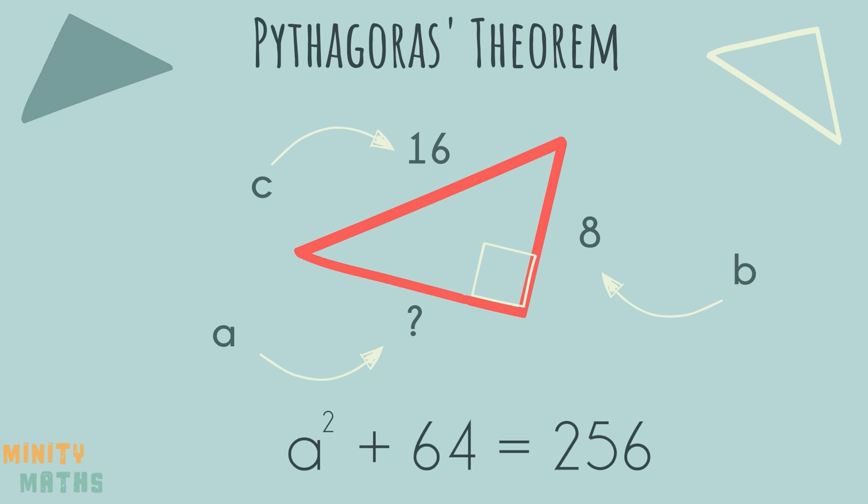So again, we square the numbers. But this time we have to rearrange the formula to get a squared on its own side of the equals sign. If you need a refresher on rearranging equations, see our video linked above.